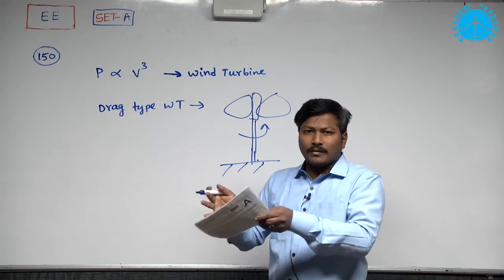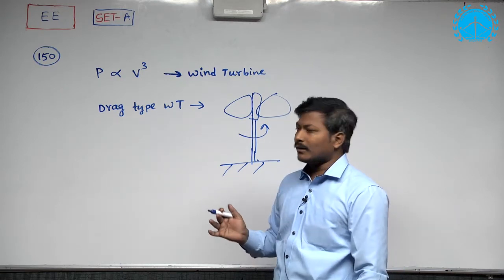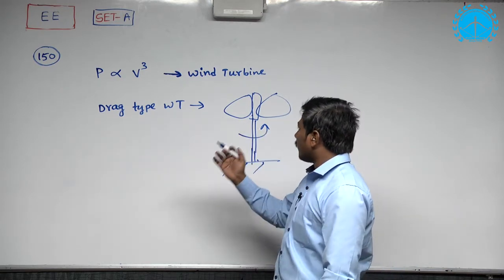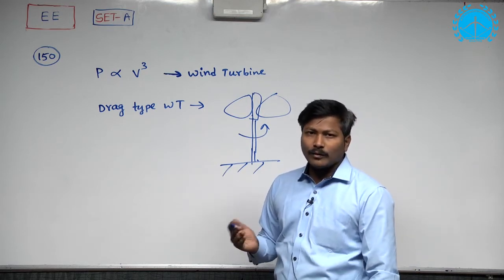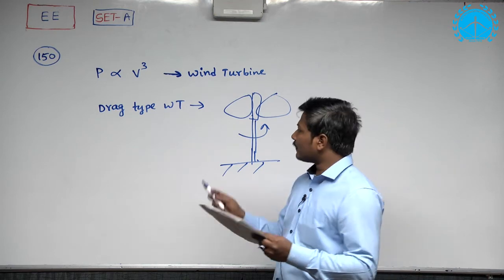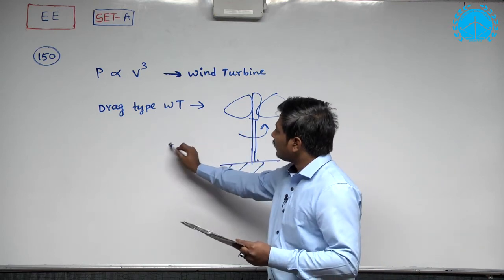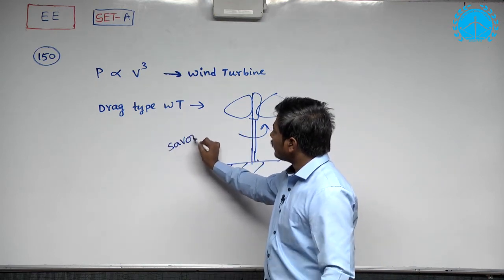The speed of the turbine may be very, very less we can expect. So, as it is operating for lower speeds, obviously the torque capability of this turbine should be very, very large. That means this drag type turbine is a type of Savonius turbine.